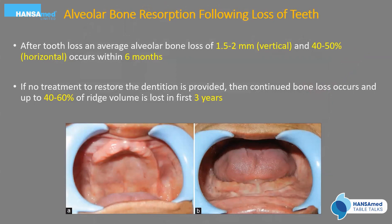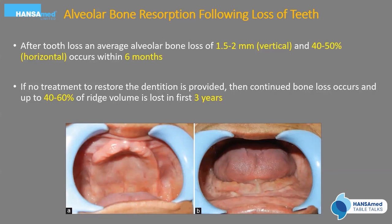In terms of alveolar bone resorption following tooth loss, on average we lose about 1.5 to 2 millimeters of vertical bone and about 40 to 50% of horizontal bone stock within the first six months. If there is no treatment, continued bone loss occurs, with 40 to 60% of ridge volume lost in the first three years. A study by Shropp in 2003 shows a loss of about 4 millimeters of alveolar width at three months, 5 millimeters at six months, and up to 6 millimeters at 12 months.